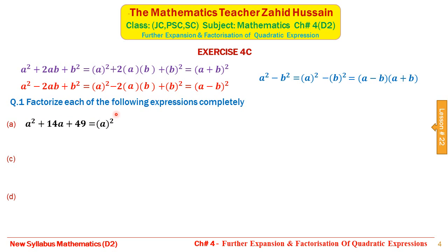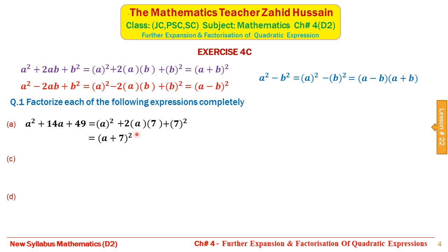We write a² as the square of a, then plus 2 with two empty brackets, then 49 as 7² — since 7² = 49. In the first bracket we write a and in the second bracket we write 7. This completes the formula a² + 2ab + b², which is the expansion of (a + b)². So the factors are (a + 7)², which can also be written as (a + 7)(a + 7).